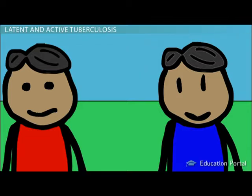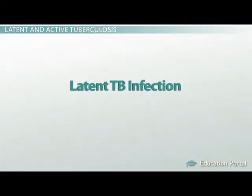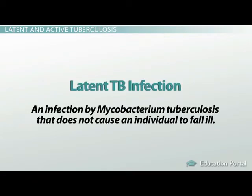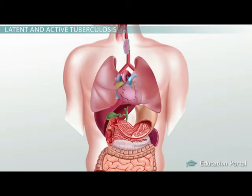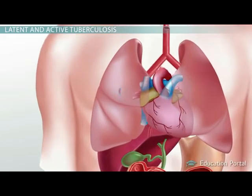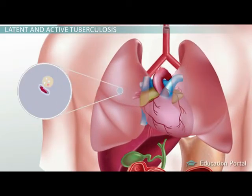This means that it will cause a latent TB infection — an infection by mycobacterium tuberculosis that does not cause an individual to fall ill. The reason this occurs goes back to our introductory scenario. If tuberculosis-causing bacteria enters your lungs, they will be immediately attacked by cells called white blood cells, which are important in something known as your immune system — basically the force that protects your body from infection and disease.